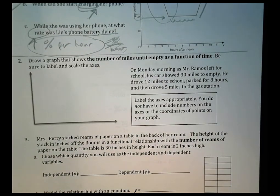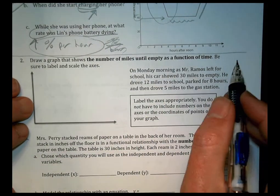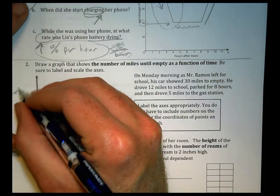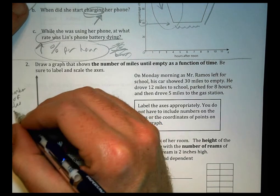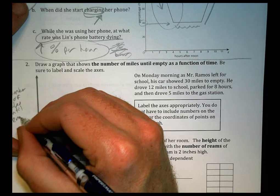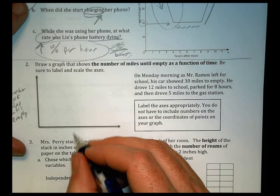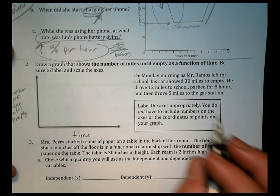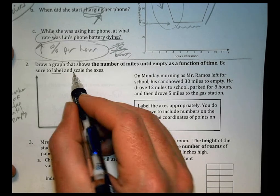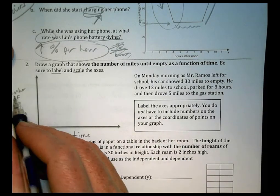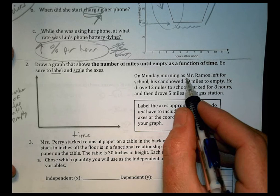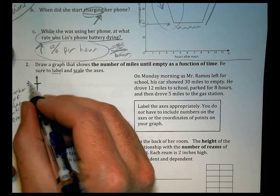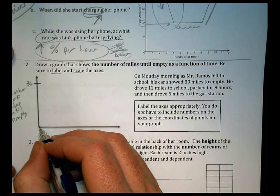Number two says draw a graph that shows the number of miles until empty as a function of time. So we're going to talk about the number of miles until empty dependent upon time. It's a function of time. Depends on the time here. We're going to label and scale. So we labeled already number of miles until empty and time. On Monday morning, as Mr. Ramos left for school, his car showed 30 miles to empty. So that's our starting point. We're going to start at 30 and we're going to go down to zero.